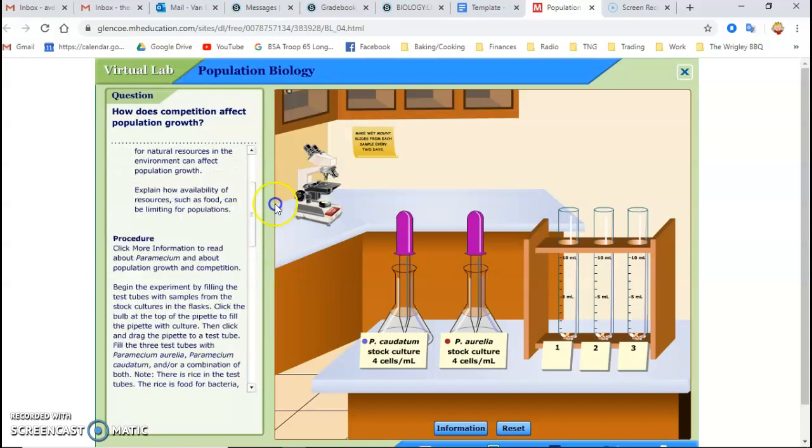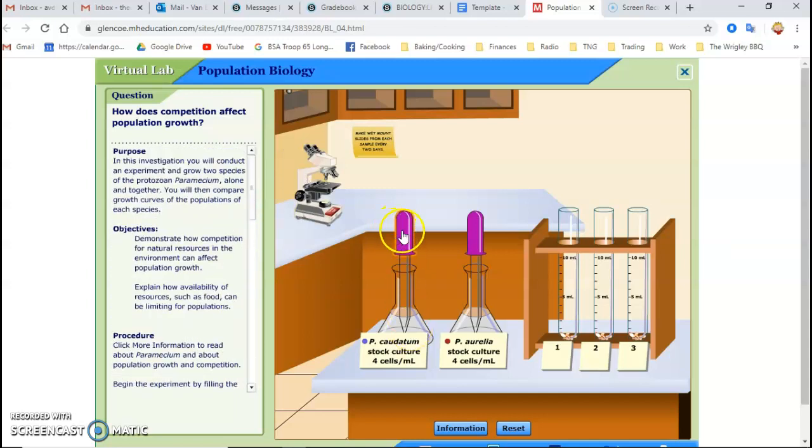So what it says to do is to take a sample from here. So you click once on the plunger, and then you drag it over, and then you squirt it in there. That's the one that goes in the first one. And then the aurelia goes in the second one, and then the third one gets both.